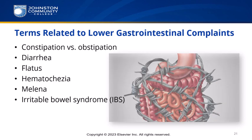Terms related to lower gastrointestinal complaints: Constipation is infrequent, incomplete, or delayed bowel movements. Obstruction is extreme constipation or intestinal obstruction. Diarrhea is the abnormal discharge of watery, semi-solid stools. Flatus is gas passed through the anus. Hematochezia is bright red blood in the stools — chezia means condition of the stools. Melena is black, tarry stools caused by the presence of partially digested blood — melano means black or dark. Irritable bowel syndrome is a group of symptoms marked by diarrhea, gas, and constipation resulting from stress or no underlying disease.